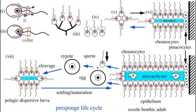And that's the choanoflagellate's tale. A protozoan similar to a choanoflagellate gave rise to the kingdom Animalia by a series of relatively simple changes in the timing and placement of different life cycle cell morphologies. Thanks for watching, and we'll see you all next time.